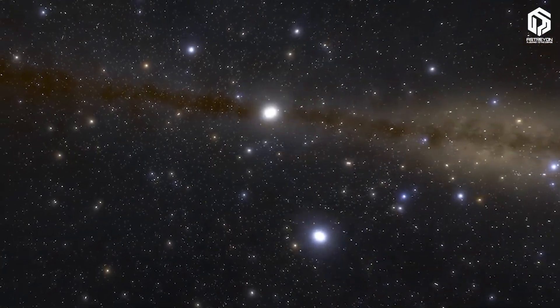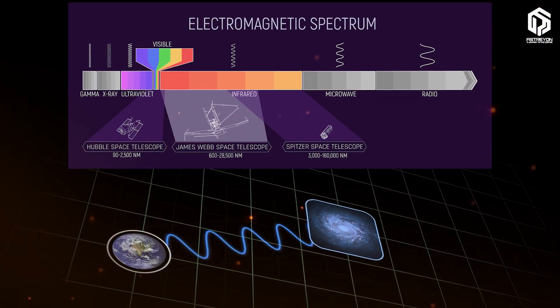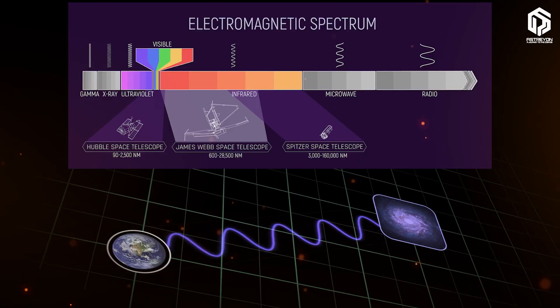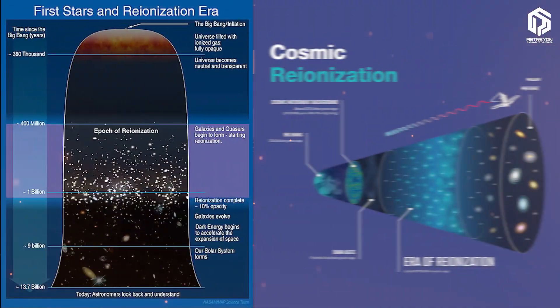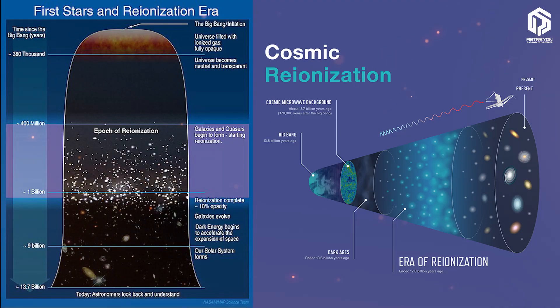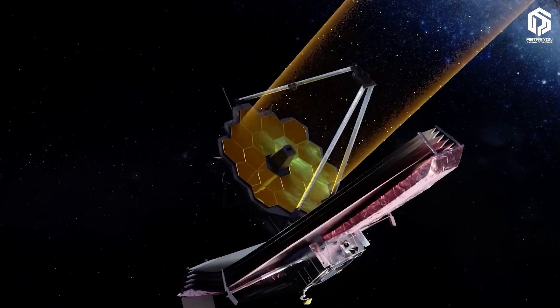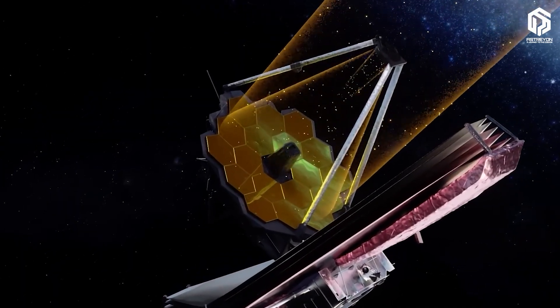JWST, with its unique ability to see infrared light, transports us to this early era, an era when the universe was still filled with neutral hydrogen fog and stars were just beginning to shine. But how does this telescope make such an immense time travel possible?